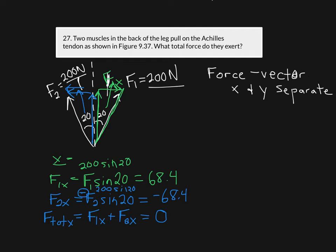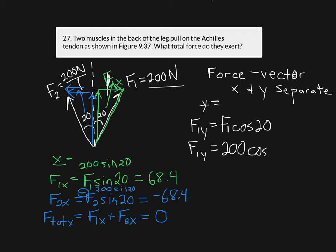Now I can do the same procedure in the y direction. F1y equals F1 times the cosine of 20 degrees. In the right triangle for F1y, going up is the y component and it is adjacent to the 20-degree angle, so I use cosine. F1y equals 200 times cosine of 20, which gives 188 Newtons.